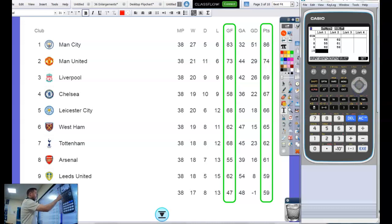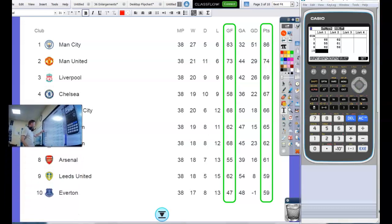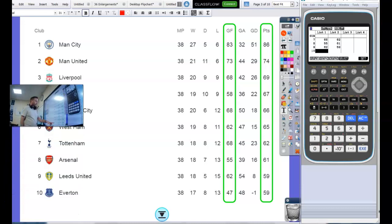If I go to number 10, number 10 is Everton there and they got 47 goals for, press 47, press execute, and then I'll go with the arrow button across there to my second list and I'll put in the number of points they got, 59, execute. So I've entered all my data in list 1 and list 2.